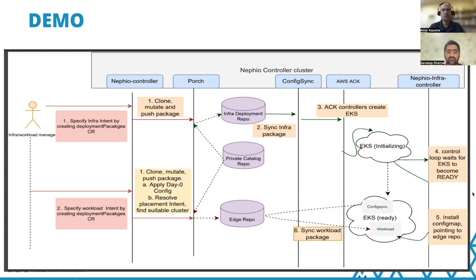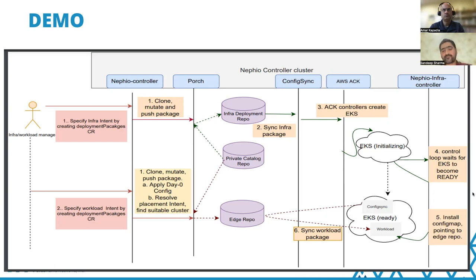That preparation is the job of the NEPheo infra controller — a POC-level controller. It watches the EKS Kubernetes resource in the NEPheo controller cluster and waits for this resource to come into ready state. Once it comes into ready state, it deploys Config Sync in the target cluster and configures Config Sync to point to its corresponding edge repo. That is the minimum preparation required to prepare these clusters for workload deployment. This completes the end-to-end path of infrastructure automation.